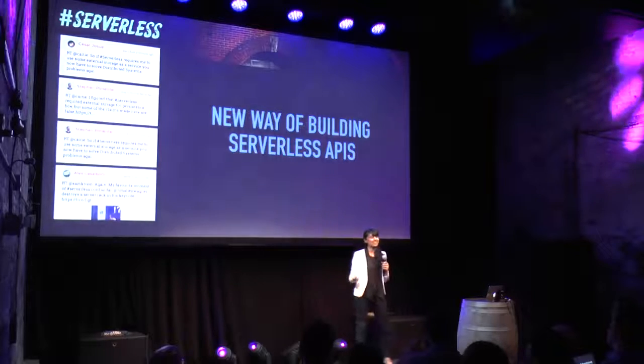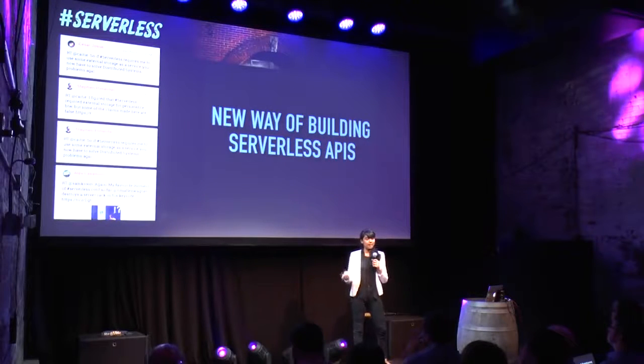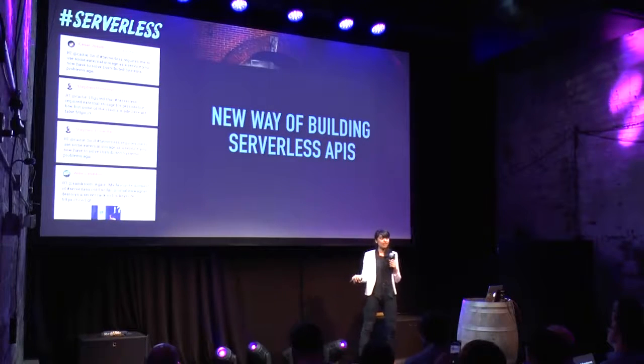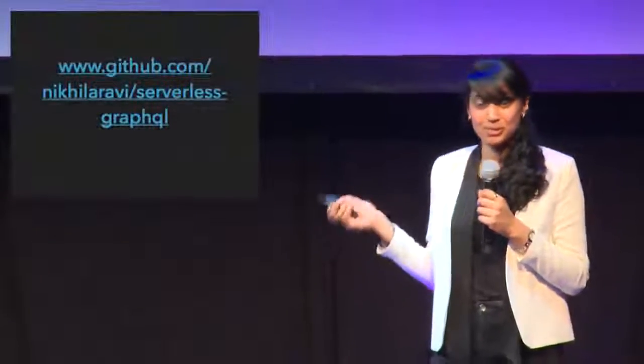We really think this is a new way of building serverless APIs. No matter how many backends your app uses, the client will only ever see a single endpoint with a simple self-documenting API. If you want to have a look at the code, it's all on GitHub — please go have a look and try it out yourself. And if you have any questions, tweet me. I'm Nikila Ravi. Thanks very much.